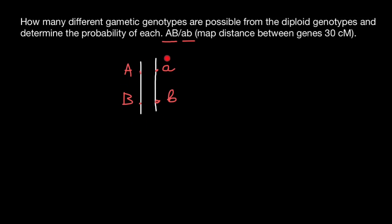So these two chromosomes represent diploid organism, but when gametes would be produced, we only will find one chromosome from this pair of chromosomes.